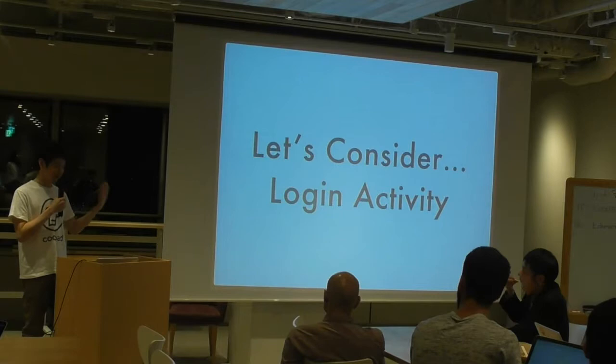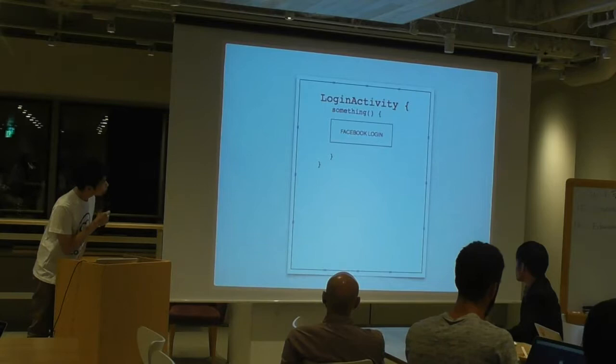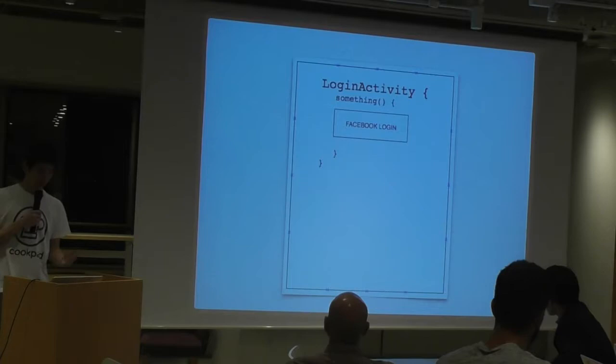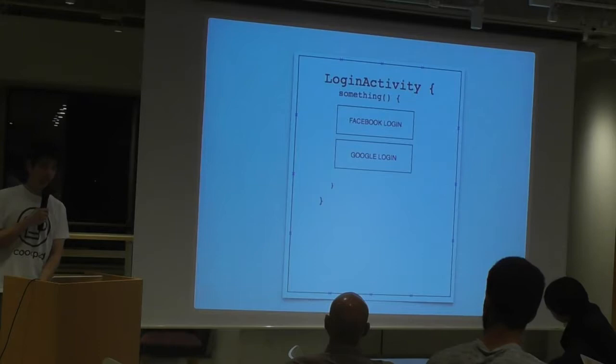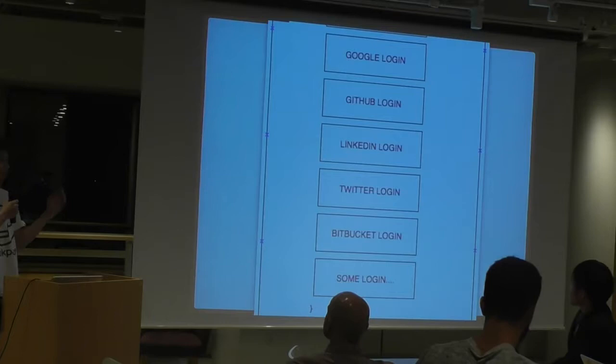Let's take a look at an activity. Say you're implementing a login activity. At first your boss tells you that you just need a Facebook login, because Facebook is the most widely used one. Later on they say we also want Google login, and slowly you have more and more. The activity becomes really long — you can easily get a thousand lines. This is a real example: in the CodePad app we had like a thousand lines of code in one activity. It's really hard to maintain.